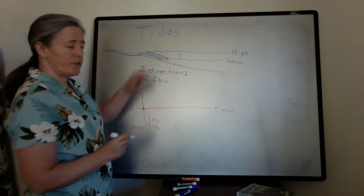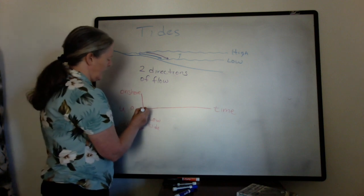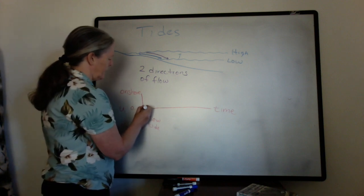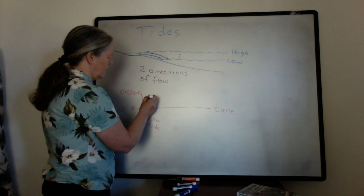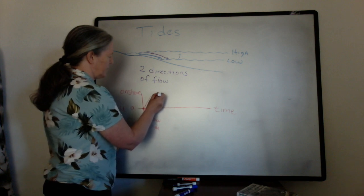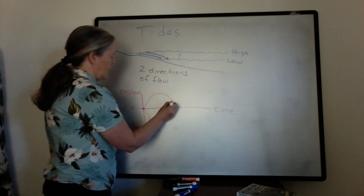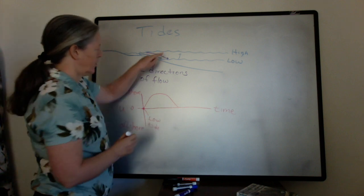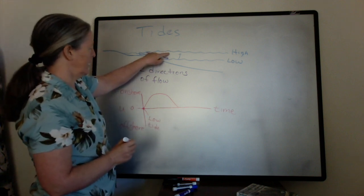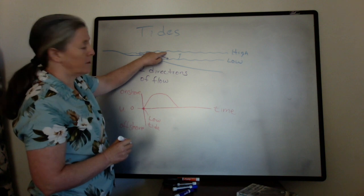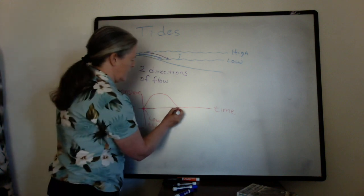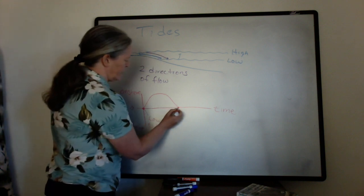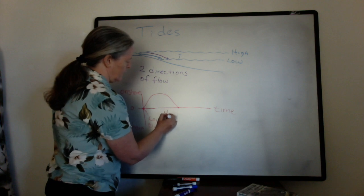As the tide starts to come in, the flow speed increases and reaches some maximum level. Then as you get closer to high tide, that flow speed slows down again. The flow speed is zero at high tide.